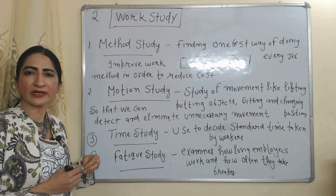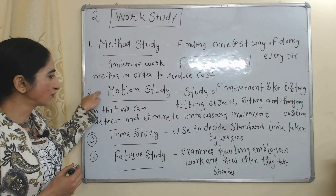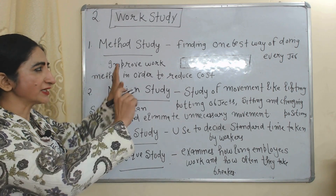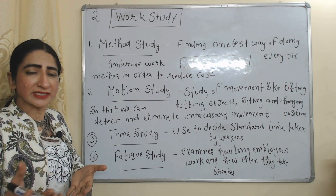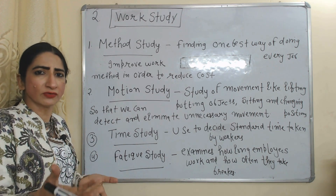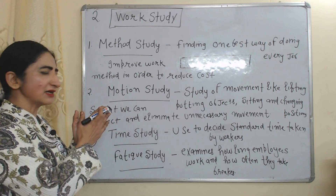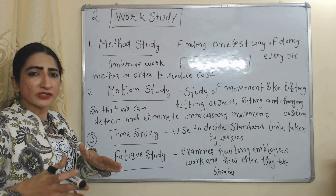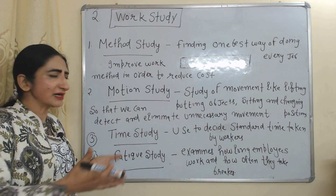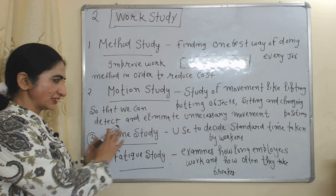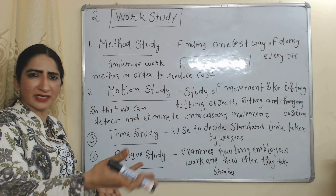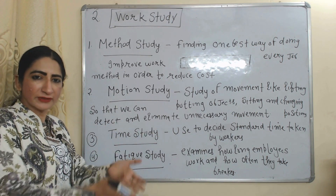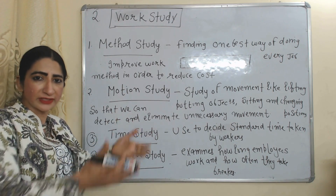The next technique is work study, which includes method study, motion study, time study, and fatigue study. Method study means finding the one best way of doing every job, and it tries to improve work methods in order to reduce cost. Motion study mainly studies movements like lifting, putting objects, sitting, and changing positions, so that we can identify and eliminate unnecessary movement. Time study is used to decide the standard time taken by workers. Fatigue study examines how long employees are working and how often they are taking rest or breaks.